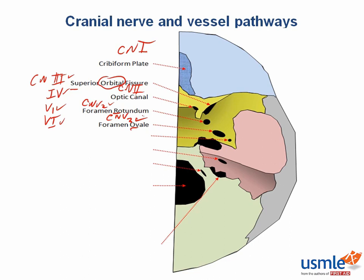The last foramen in the sphenoid bone is the foramen spinosum. This is not for cranial nerves — the middle meningeal artery passes through here, so you should definitely know about it. Another mnemonic that may help is ROS — which usually stands for review of systems — but here: rotundum, ovale, and spinosum.